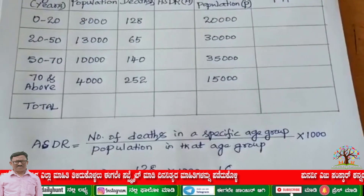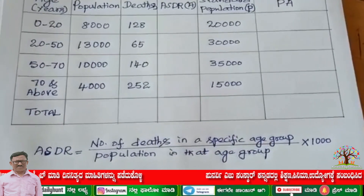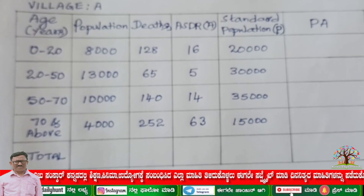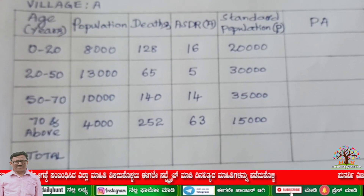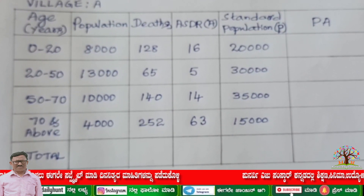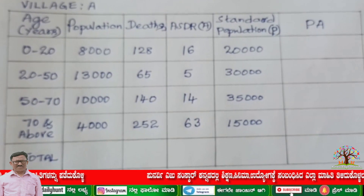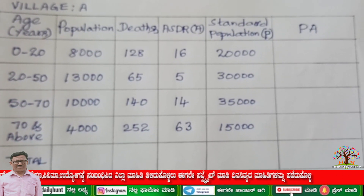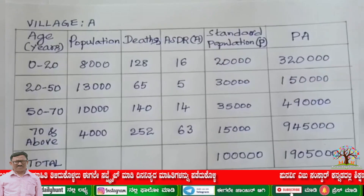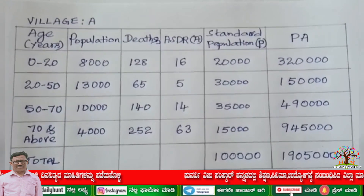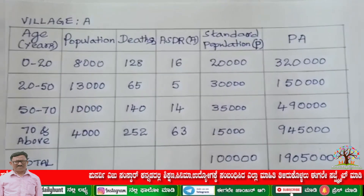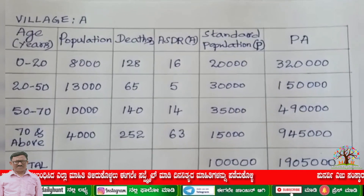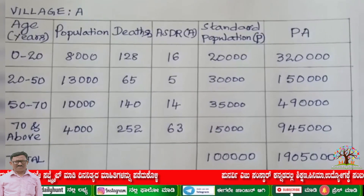Same way, calculate ASDR for all age groups and fill up the ASDR column. The ASDR values calculated are 16, 5, 14, and 63. Then, multiply ASDR (A) by standard population (P) to get the PA column: 16 × 20,000; 5 × 30,000; 14 × 35,000; 63 × 15,000 — and total them. That is what we call summation PA.